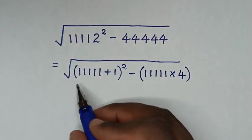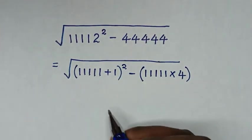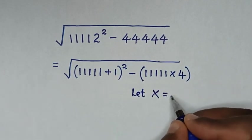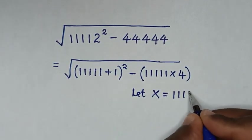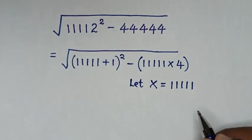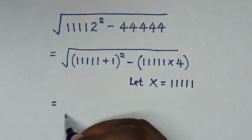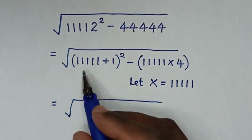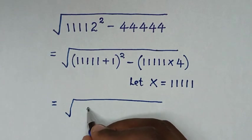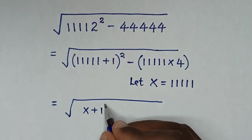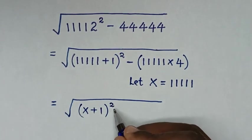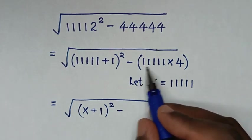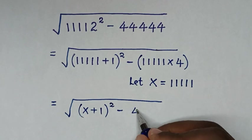Then in the next step, let x equal 11111. So it will be equal to square root of (x plus 1) squared, then minus x times 4, which is 4x.